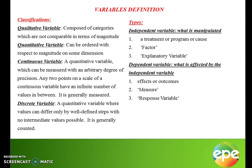Variable definition is classified into two parts: classification and types. Under classification, we look at qualitative variables, quantitative variables, continuous variables, or discrete variables. Qualitative is composed of categories; quantitative can be ordered by magnitude; continuous can be measured with an arbitrary degree of precision; and discrete values differ only by well-defined steps. Under types, you have the independent variable — what is manipulated — and the dependent variable — what is affected. Independent variables include factors, treatments, programs, or explanatory variables, while dependent variables include response variables, measures, effects, or outcomes.